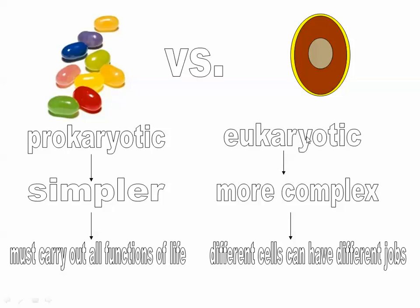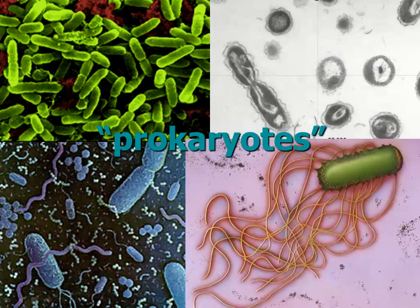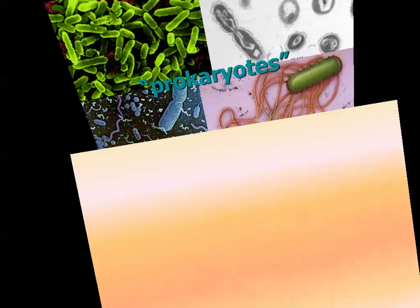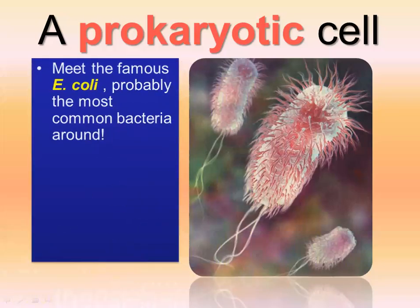Don't confuse amoeba and other protists with bacteria, which are approximately 10 times smaller and much simpler in structure. Here are some pictures of various prokaryotic cells — these are all different types of bacteria. In general, a prokaryotic cell is very small and it doesn't have a nucleus, as we're going to see in a second.